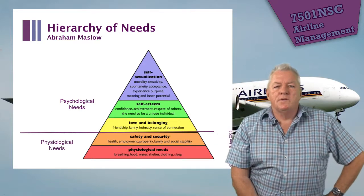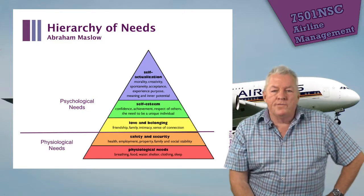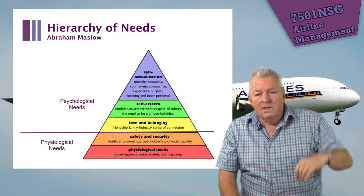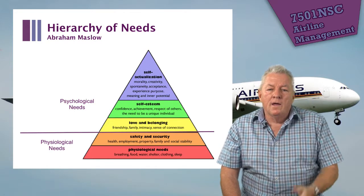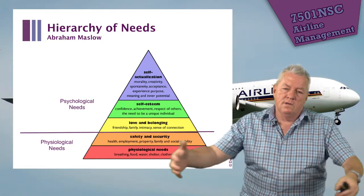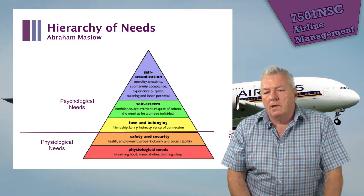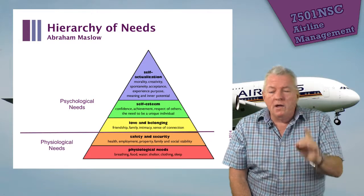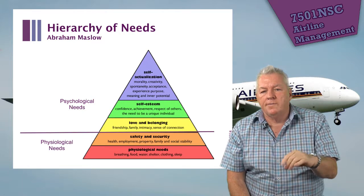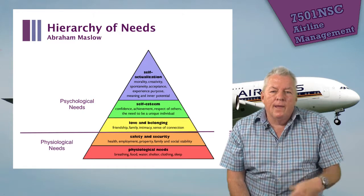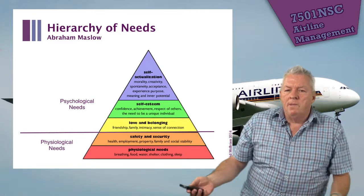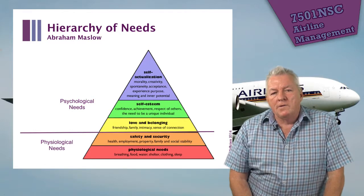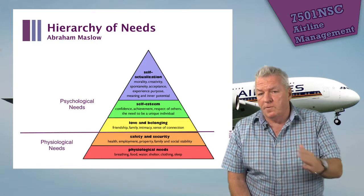Abraham Maslow's hierarchy of needs covers physiological and psychological needs. As a manager, you must understand that some staff members still operate at the safety and security level and need constant reassurance. Others seek love and belonging, esteem, or — ideally for postgraduate students — self-actualization: focusing on morality, creativity, acceptance, and realizing inner potential. Maslow tells us managers need to understand not only themselves but also those who work for them.